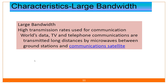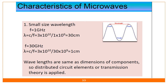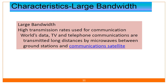The second property is large bandwidth. If we are talking about 1 GHz to 30 GHz, the bandwidth of this signal is about 29 GHz. Gigahertz is 10 raised to 9, so this is a very large bandwidth. This large bandwidth enables high data transmission rates used for communication.